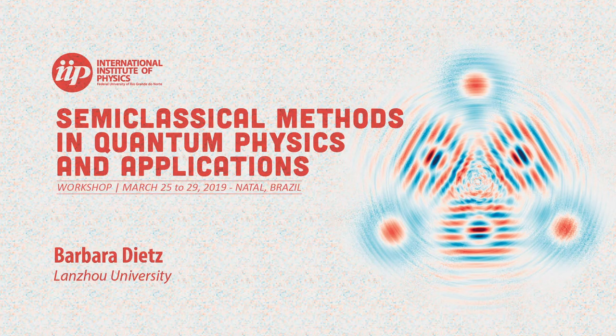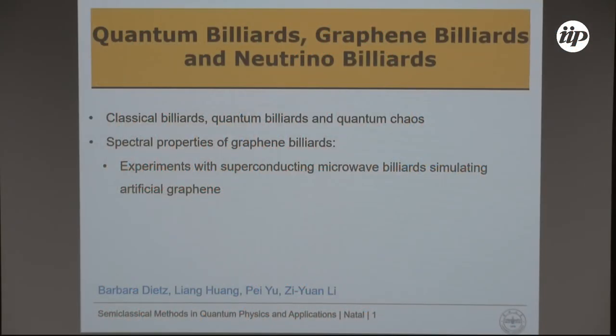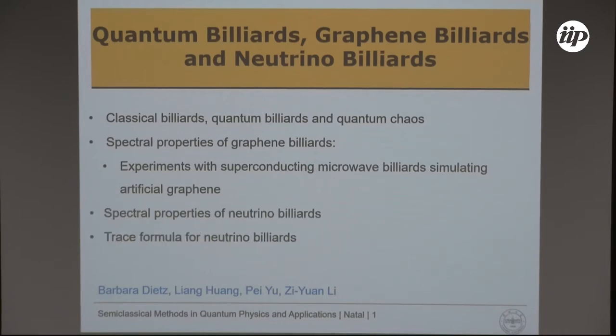This talk covers billiards, quantum billiards and quantum chaos, then spectral properties of graphene billiards. I will shortly introduce experiments we performed to simulate artificial graphene, which will now be continued in Lanzhou. Then I will speak about spectral properties of neutrino billiards and the trace formula, followed by an outlook if there is still time left.